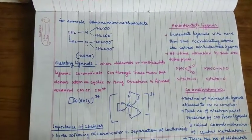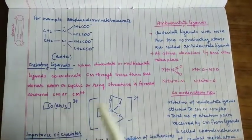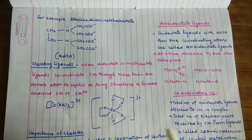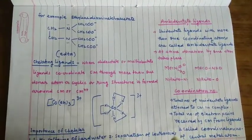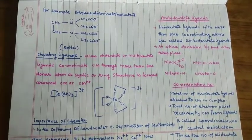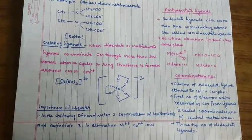Now children, ambidentate ligand. देखिये ambidentate क्या होता है, they are unidentate ligand but two different donor atoms। तो चूंकि दो different donor atoms हैं तो ऐसा हो सकता है और दोनों तरफ से वो donation कर सकता है।